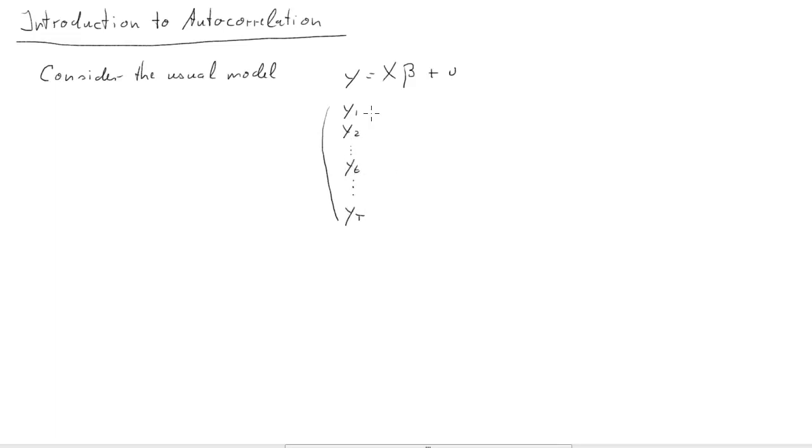We have a little subscript t here in the variables to indicate we're having time series data, and that means the order of the variables matters. The first column of x is a vector of ones to indicate a constant, and then we have a beta coefficient vector.